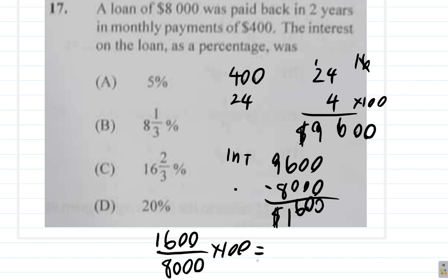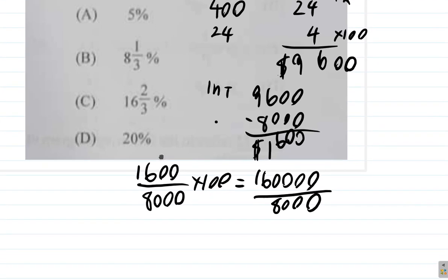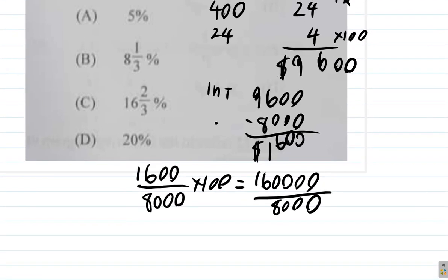And that will give you the percentage. So this is the same as 1,600 times 100 divided by 8,000. Now let's divide that up. There are 8,000 in 8,000, and there are 16 in 160,000.